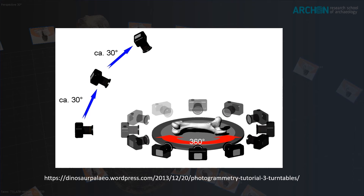Now everything is set. Start taking photos while rotating the object a fixed number of degrees. The increments of rotation depend a bit on the complexity of your object. Small increments of 10 degrees are generally fine, resulting in 36 images for a full rotation. But with many objects you can go for less, like this example that takes a photo every 30 degrees. Keep in mind that photogrammetry requires much overlap between the photos — between 60 and 80% overlap is recommended.